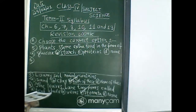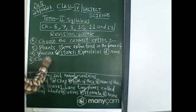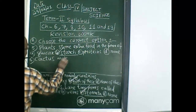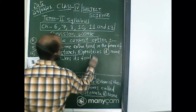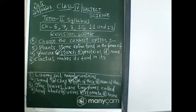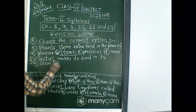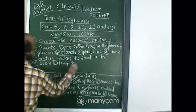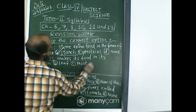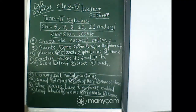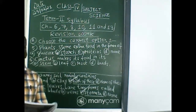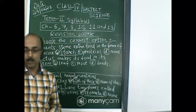Question number six: Cactus makes its food in its? The correct answer is its stem — option A is the correct one.